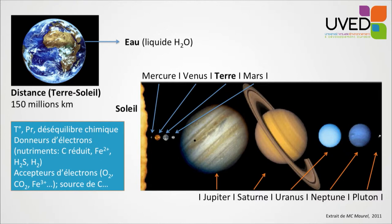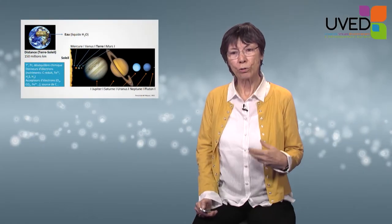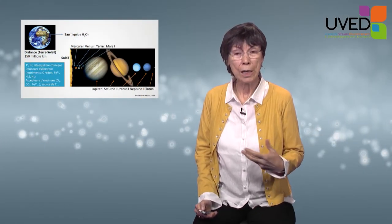Life, in order to express itself, needs a certain temperature. And the Earth is well positioned at the right distance from the sun, with an adequate pressure. Life needs a chemical unbalance — if everything is balanced, the organisms will die. Life needs nutrients, electron donors, electron acceptors, sources of carbon. And all of these ingredients can be found on the surface and inside planet Earth.